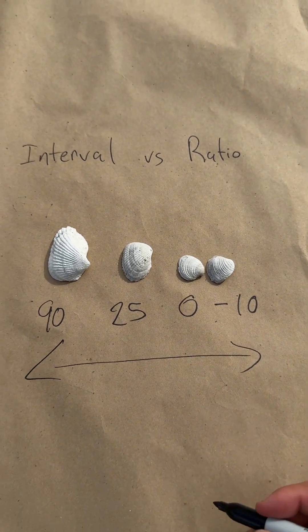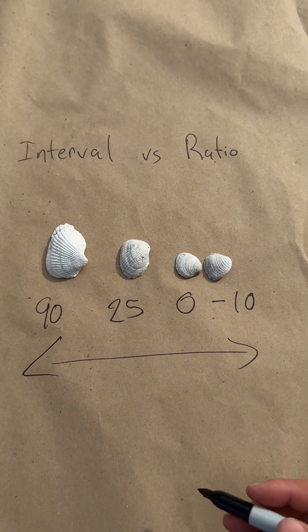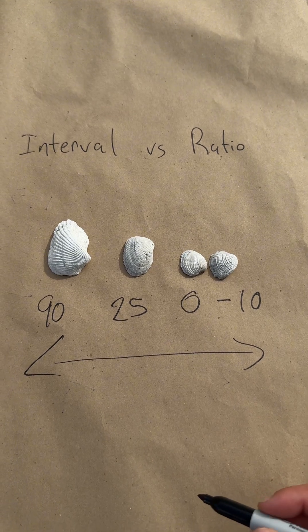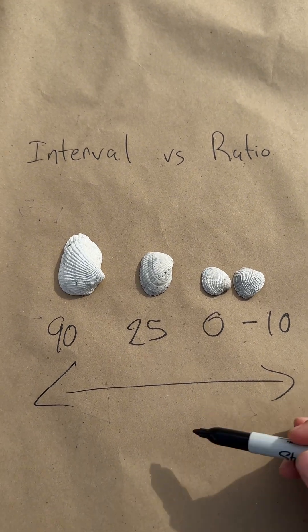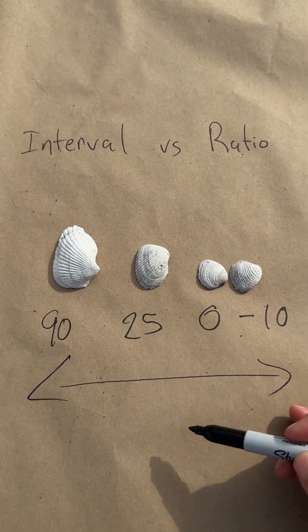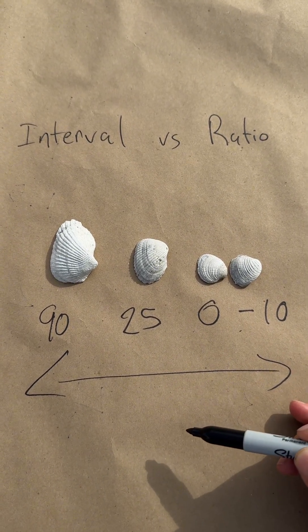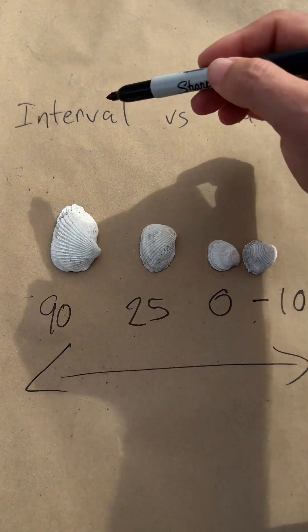However, when we're working with ratio data, zero cannot be the absence of something. So for example, if we were going to use ratio data here, we might use the weight of the individual shells.